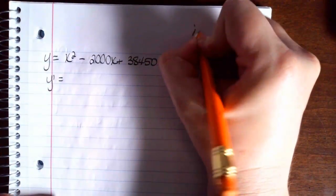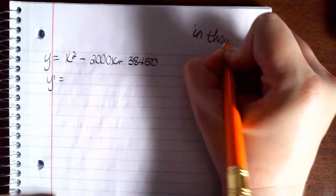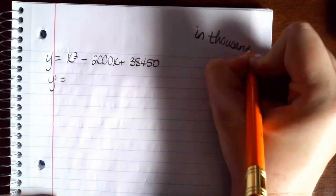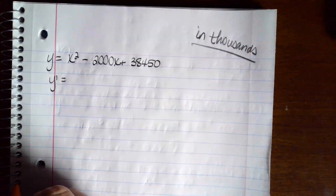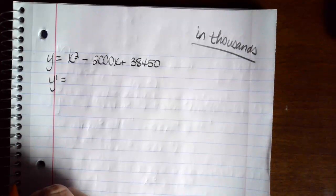Notice that it is in thousands. So how many units of cell phones minimizes this cost function? So you see the word minimize, that tells you increasing, decreasing, maxes and mins.